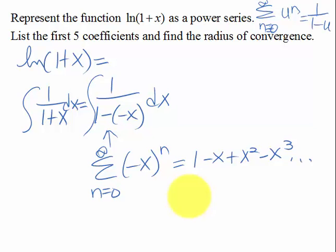And if we integrated this term by term, we would get x minus 1 half x squared plus 1 third x cubed minus 1 fourth x to the fourth, and so forth.